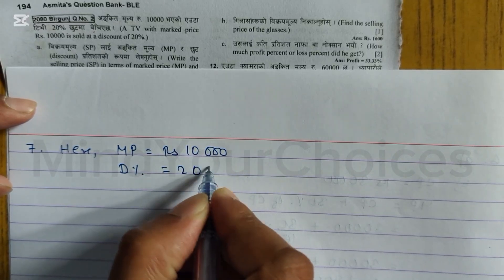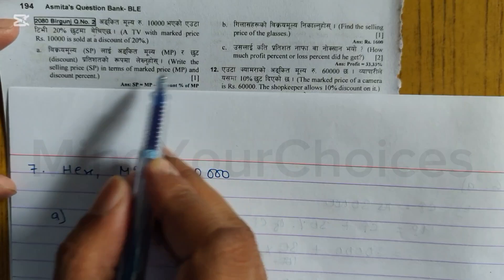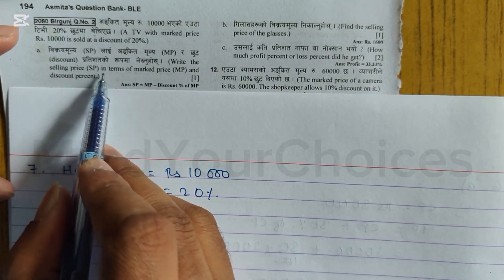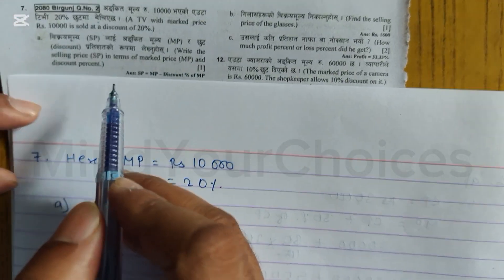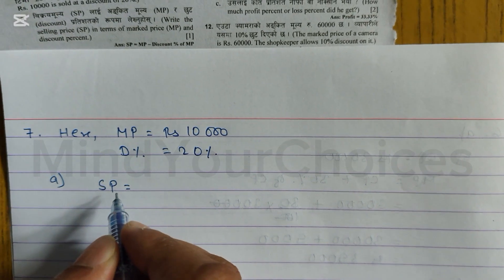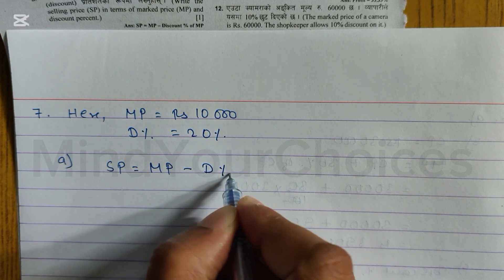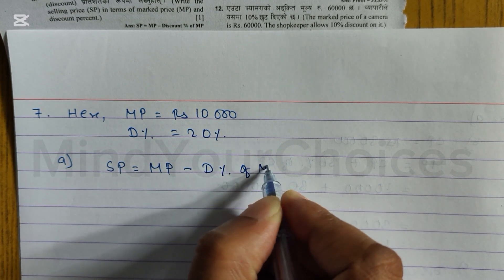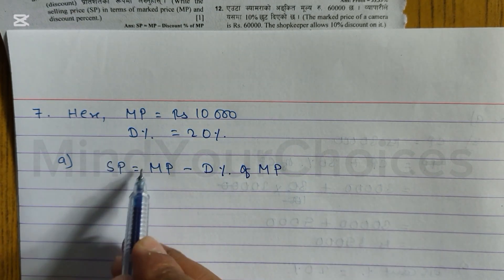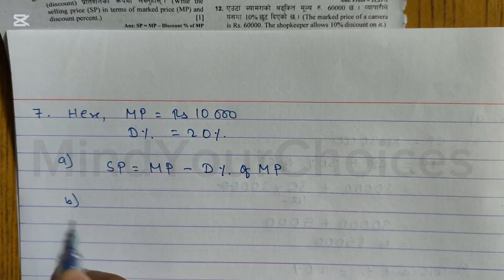Number A asks: write the selling price SP in terms of mark price and discount percent. We need to write the SP formula in terms of MP and discount percent. The formula is MP minus discount percent of MP.